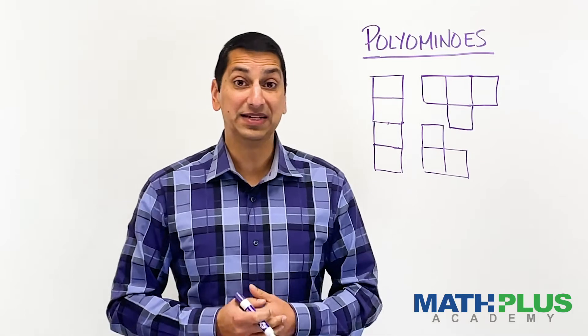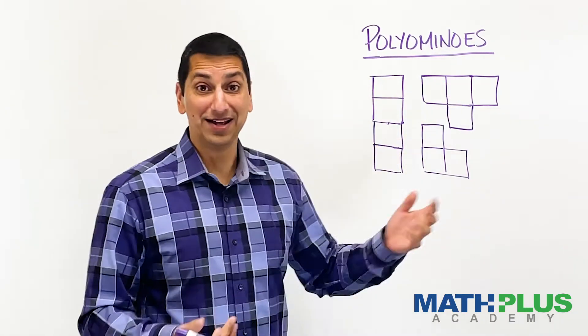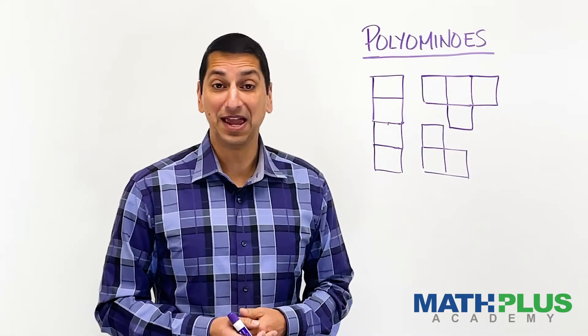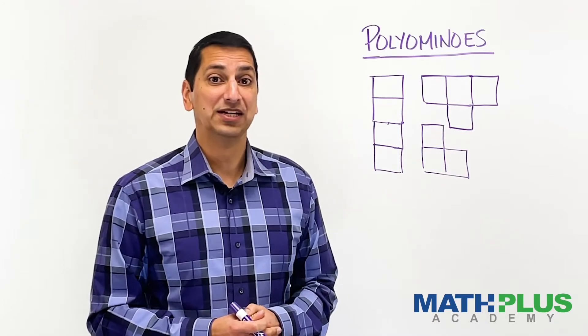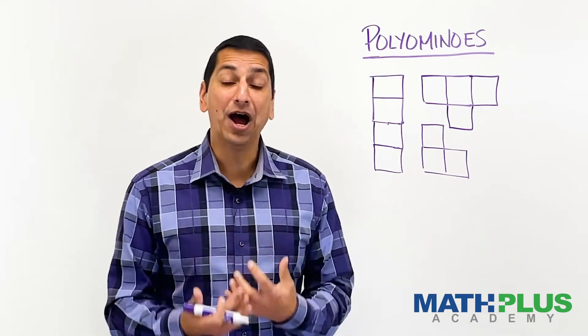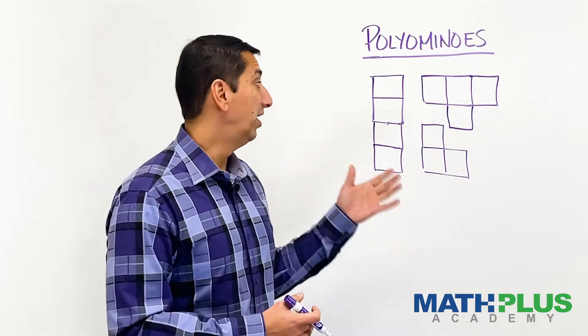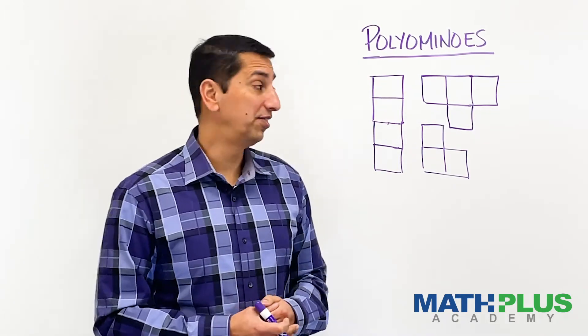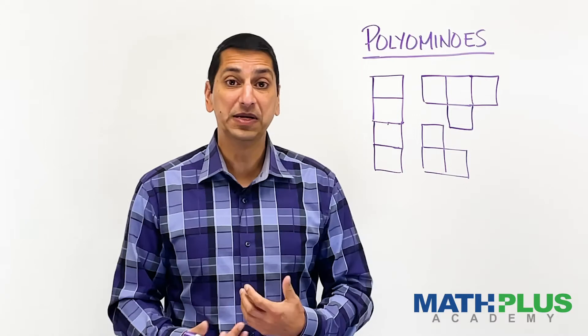If you've ever played Tetris, you might recognize these shapes. They're the game. The game is made out of tetrominoes. So that could give you a little head start on these. My question here is how many different kinds of tetrominoes are there? I've made two for you. How many more can you find?